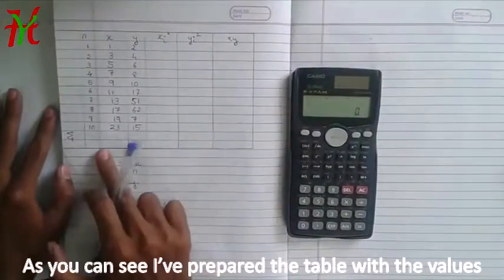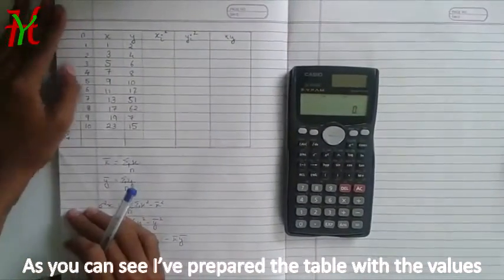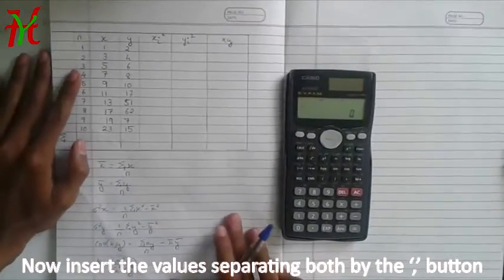As you can see, I have prepared a table with the values of X and Y and this is the corresponding data from stage 1, 2, 3, 4, 5, 6, 7, 8, 9, up to 10. So I will be inserting the values of X and Y.